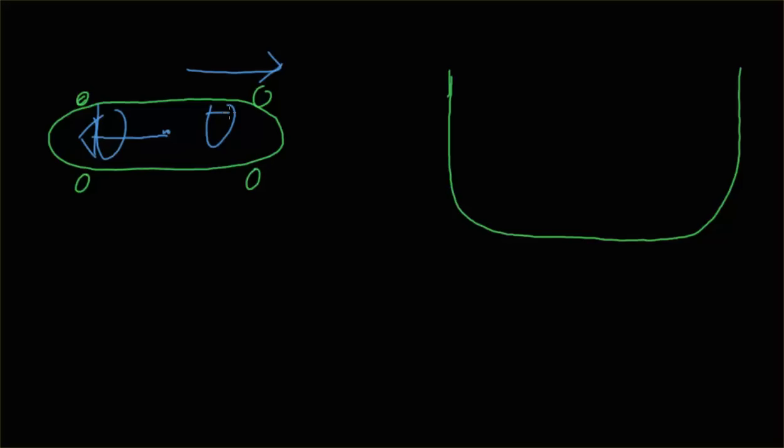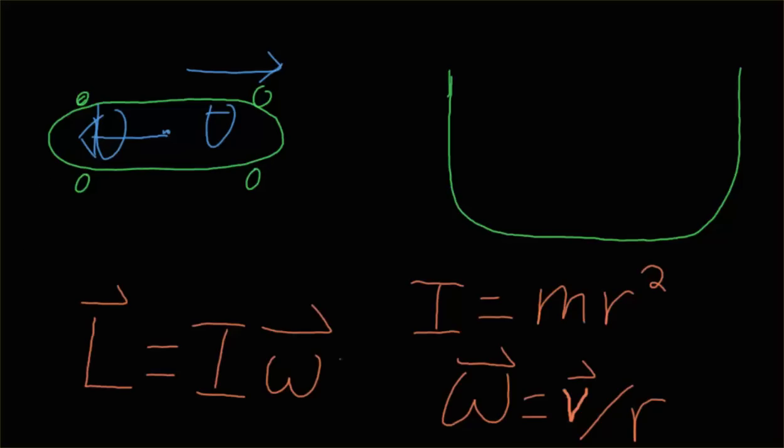But in physics, we have angular corollaries to everything that we're introduced to linearly. And so the corollary to momentum is angular momentum. And mass becomes rotational inertia, and velocity becomes angular velocity. Rotational inertia is mass times the distance to the center of rotation squared. And this right here is where we have something to work with.